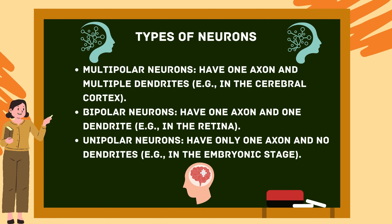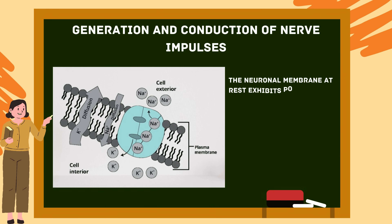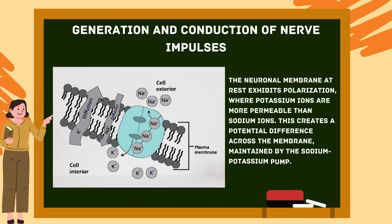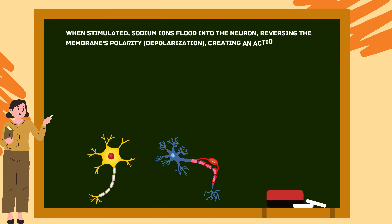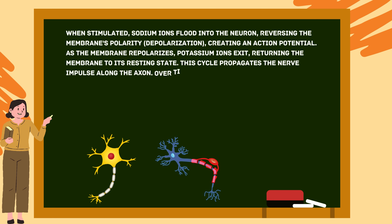Regarding generation and conduction of nerve impulses: the neuronal membrane at rest exhibits polarization where potassium ions are more permeable than sodium ions, creating a potential difference maintained by the sodium-potassium pump. When stimulated, sodium ions flood into the neuron, reversing the membrane's polarity — this is depolarization — creating an action potential. As the membrane repolarizes, potassium ions exit, returning the membrane to its resting state, and this cycle propagates the nerve impulse along the axon.